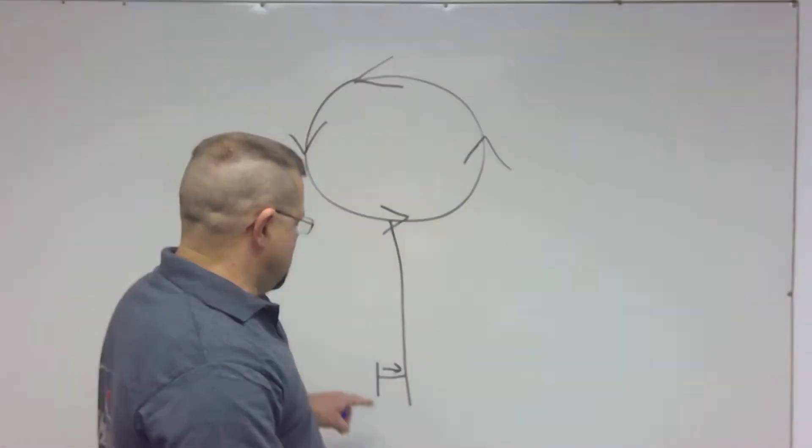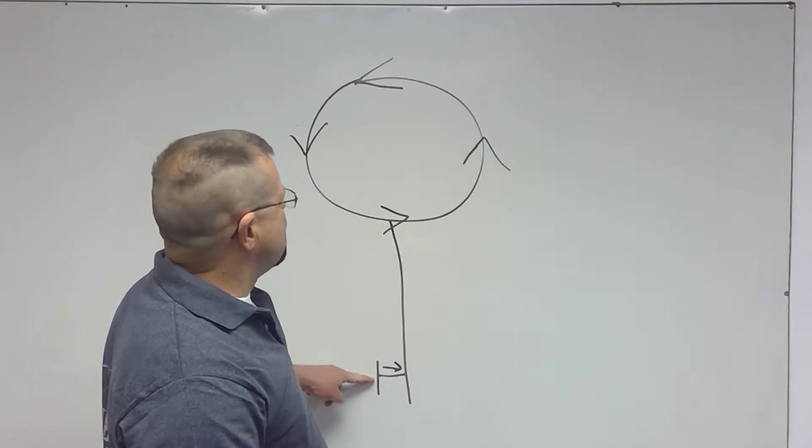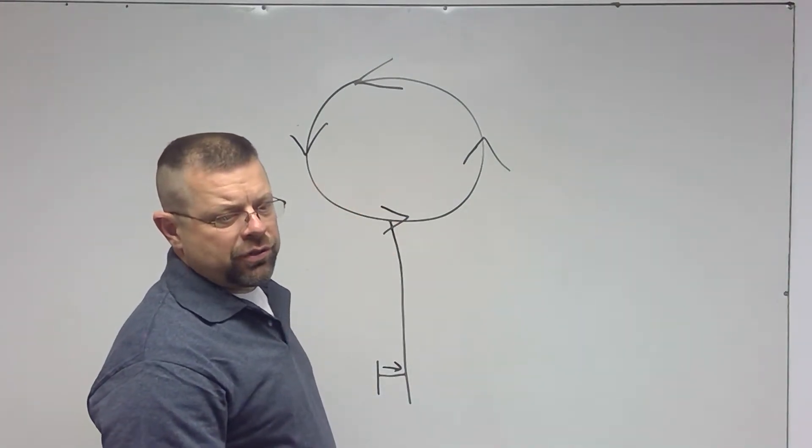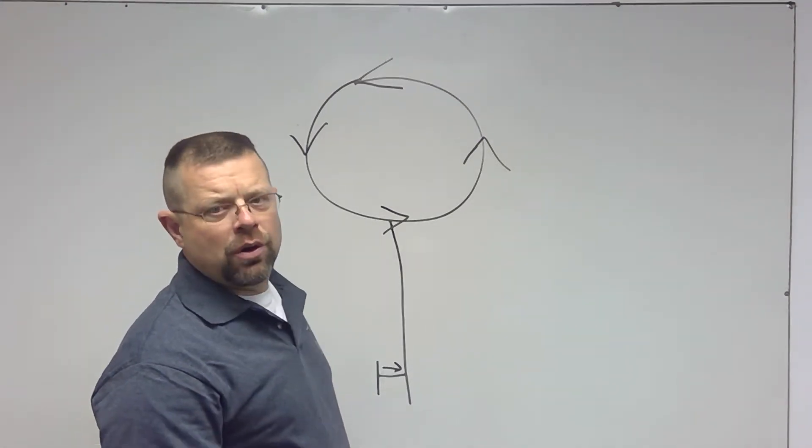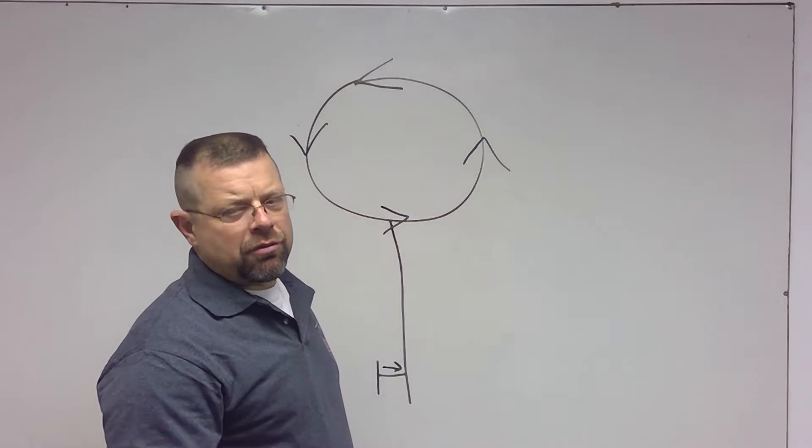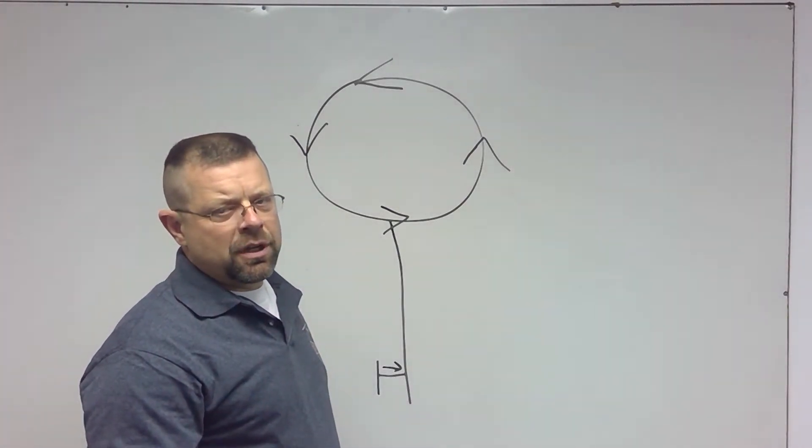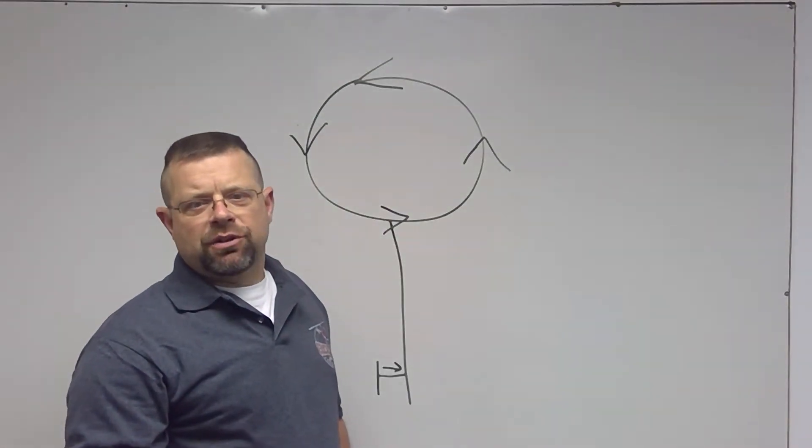In other words, as you add throttle to the helicopter, you'll be adding torque to the rotor system, which will cause the nose to go right. As you roll the throttle off, you're reducing torque on the rotor system, causing the nose to go left, and you would slide it on.